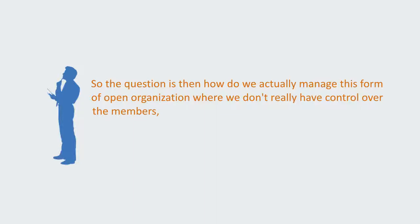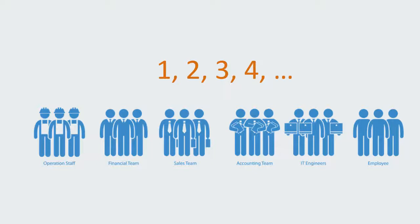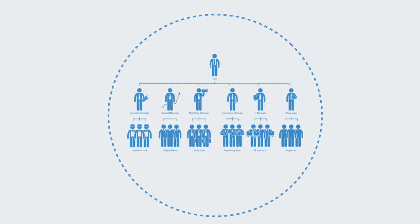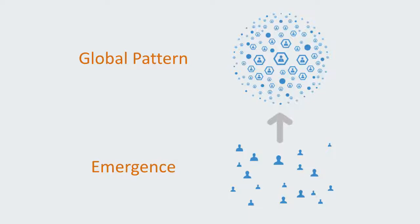The question then is: how do we actually manage this form of open organization when we don't really have control over the members, but they are interdependent and we need to get a functioning global outcome? Our traditional reductionist approach is predicated upon being able to directly itemize and control the members of the organization — creating a boundary and a hierarchy within it, where top management decide what is best. Global macro-level patterns in complex systems are emerging phenomena of local-level interactions that give rise to self-organization.